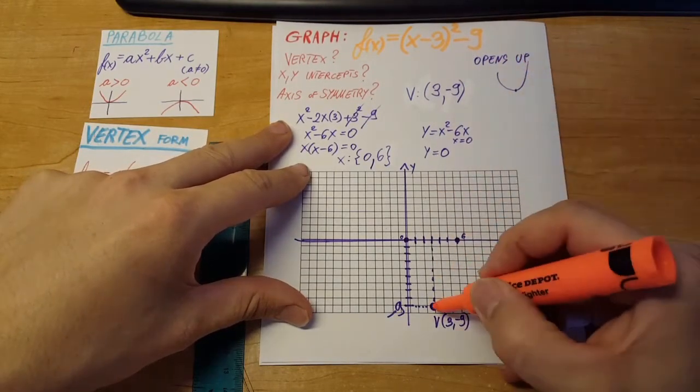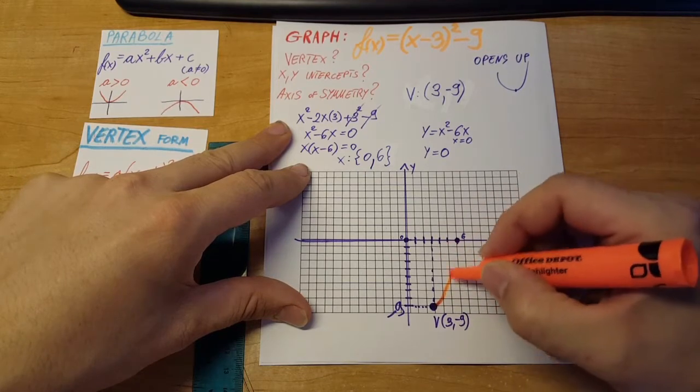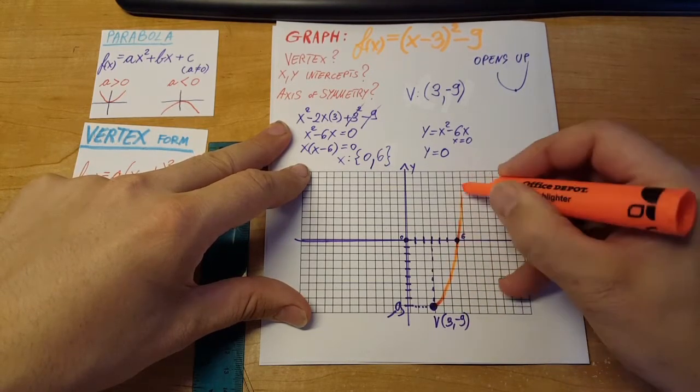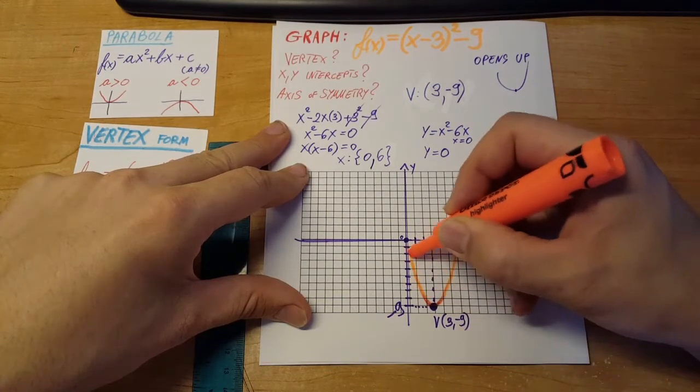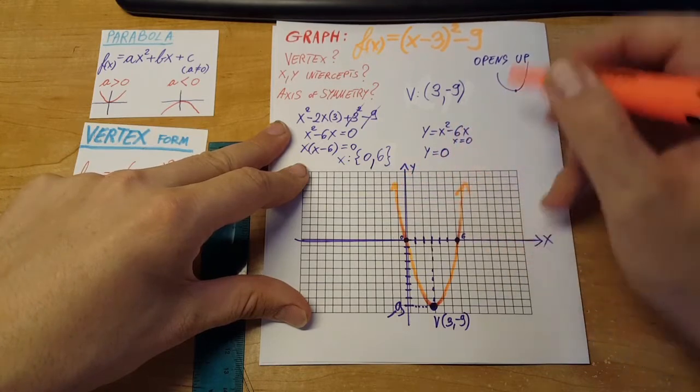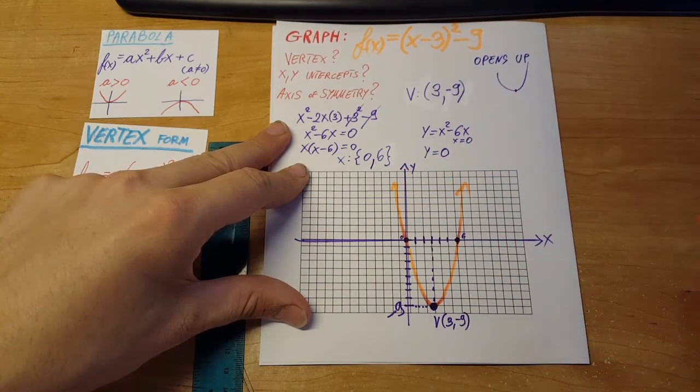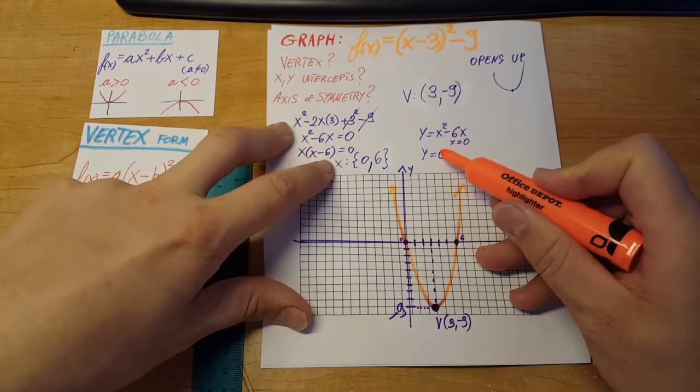And it opens up, so let's go from our vertex towards the x-intercept. On this side, we go from the vertex towards the other x-intercept, and go upwards just like we calculated. There you go. We can see that this 0 matches the x and the y-intercept.